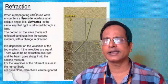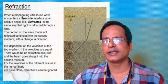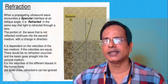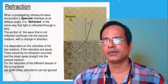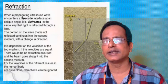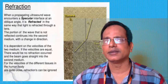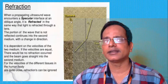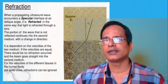Next is refraction. In tissue interaction, refraction also occurs. When ultrasound strikes at an angle, it penetrates through another medium, moving from one medium to another. For example, from the transducer medium into the tissue medium, or between different tissues within the body, tissue A and tissue B.